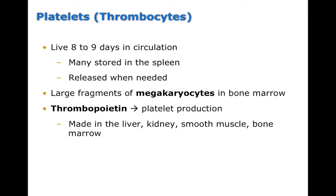Some of the major players in hemostasis are platelets, which we also call thrombocytes. Thrombocytes is the more commonly used term in pathophysiology — we'll use words like thrombocytosis or thrombocytopenia. Platelets are small cellular fragments; they're not even a true cell, which is why thrombocyte is a misnomer. They last about 8–9 days in circulation, and large fragments called megakaryocytes give rise to platelets.